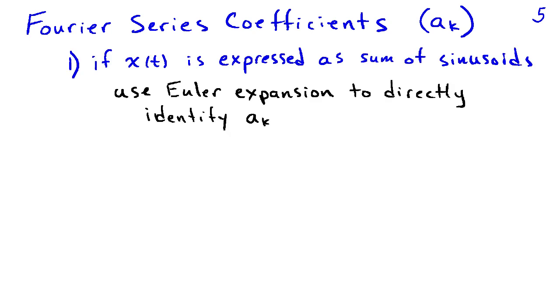The first method is a special case that's particularly simple, and that applies when x(t) is expressed as a sum of sinusoids to begin with. If you have a periodic signal that's expressed as a sum of sinusoids, then you can take the sinusoids, apply the Euler expansion, and directly identify the a_k.